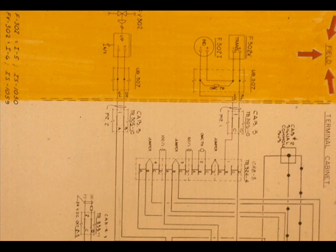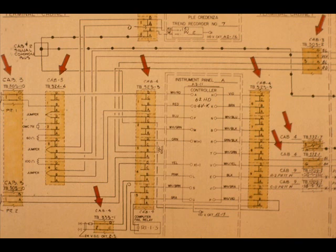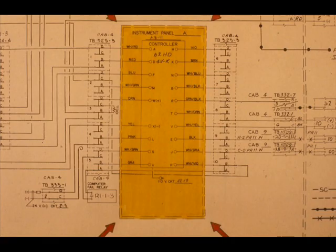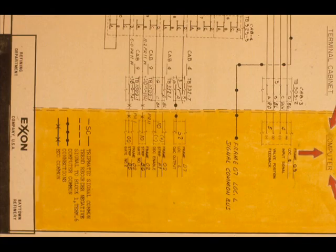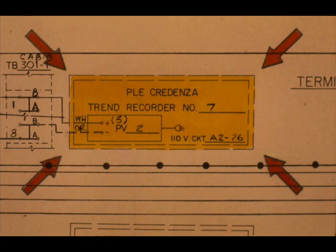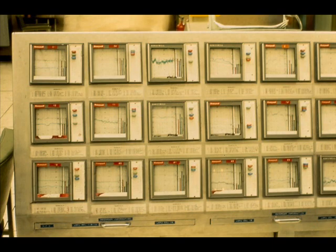This is loop F302, the same loop diagram that you used in your workbook. The loop diagram is divided into field, terminal cabinets three and four, instrument panel A, and computer. Also included in the loop diagram is a credenza. A credenza is a bank or bookcase of recorders.